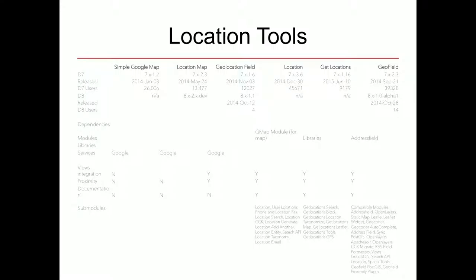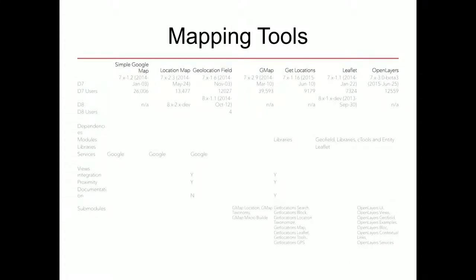I'll have this presentation online so you can look at this later. There's a similar comparison view for the mapping side — from simplest on the left to most complex on the right. When you get to Open Layers it's a huge leap upward in configuration. You could start with Geofield and use Leaflet or Get Locations as the mapping solution, then later drop in Open Layers if you want something more complex. It all depends on your use case.